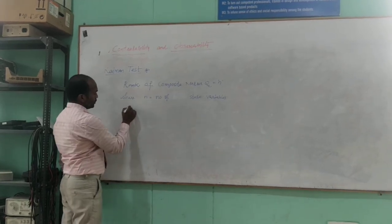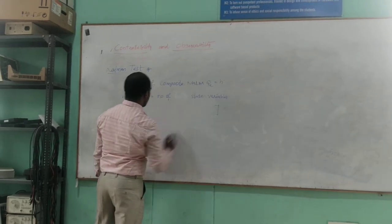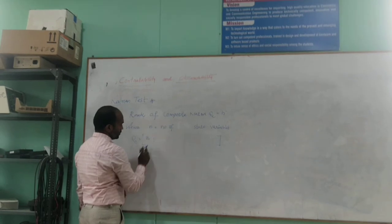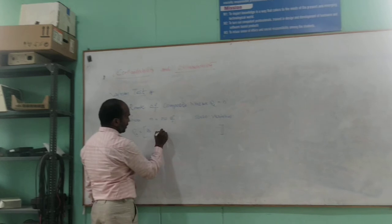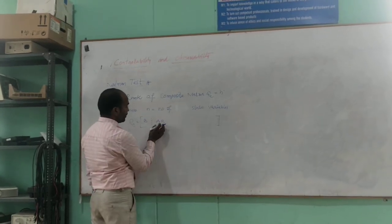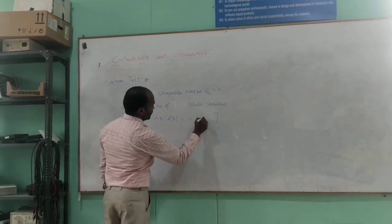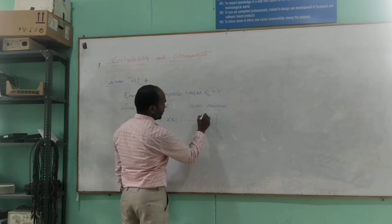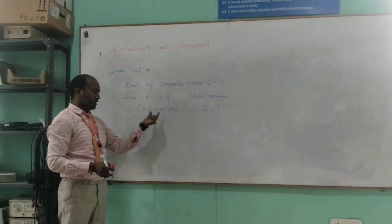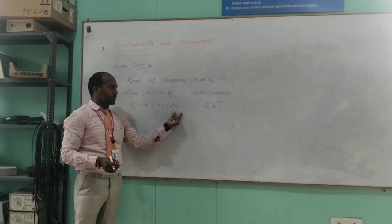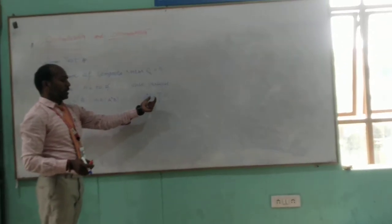Coming to the structure of the composite matrix Qc for controllability, it starts with B as the first column, followed by AB, then A²B, and so on. The last column is A to the power of N minus 1 times B. So the first column is B, the next column is AB, the next is A²B, and so on up to A^(N-1)B.